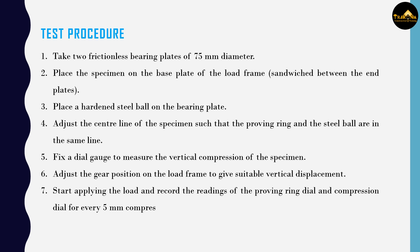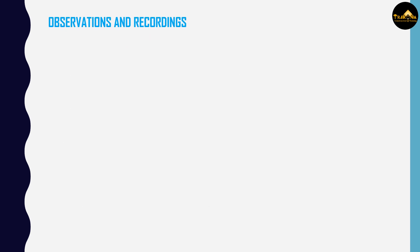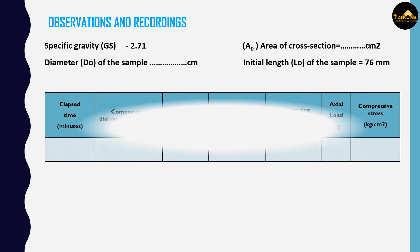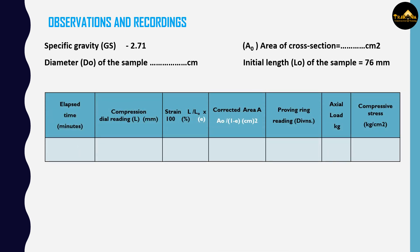Observations and recordings: After preparation of sample, note its diameter, height, and calculate its area of cross-section. By performing test procedure, note dial gauge readings and change in length of specimen. Calculate corrected area of specimen and note down the load as shown in tabular column.